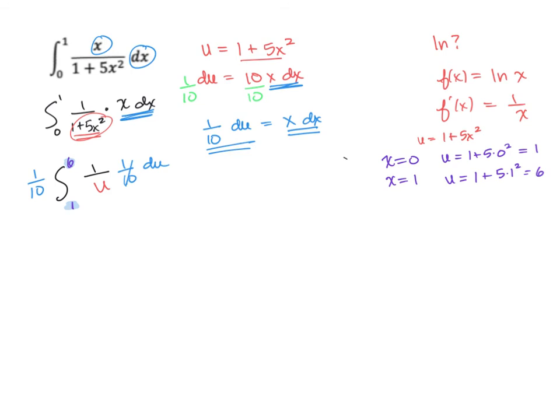Since u equals 1 plus 5x squared, then that means u equals 1 plus 5 times 0 squared, and 1 plus 5 times 1 squared. So this is going to give us 1, and this is 5 plus 1 equals 6. So our new u limits go from our 0 gets replaced by a 1, and our 1 gets replaced by a 6. So now what we're going to do is we're going to integrate this. So I'm going to erase this, because it's bothering me that it's there. There you go. So it's a little cleaner looking, and so now we can actually integrate.